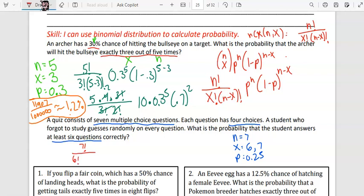7 factorial over 6 factorial times 7 minus 6 factorial, times 0.25 to the 6th power, times 0.75 to the 1st power.